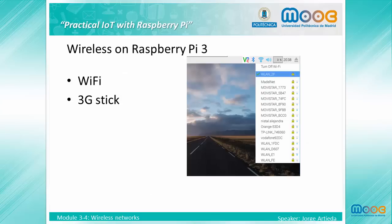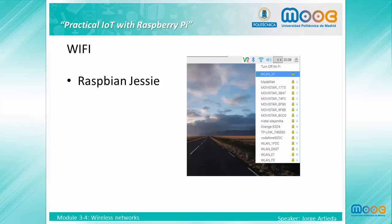On our Raspberry Pi, the easiest options for wireless connection are Wi-Fi and a 3G stick. Since the Raspbian Jessie version, Wi-Fi is configured by default and we only need to provide the access point and the password to finish the configuration.